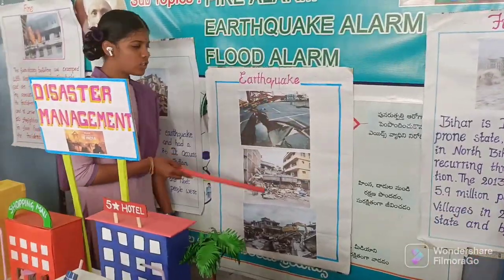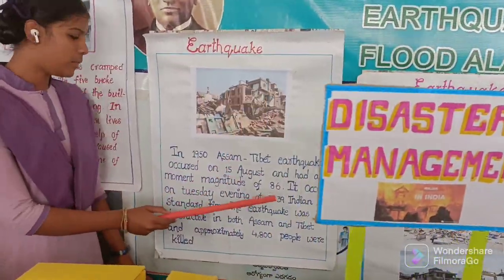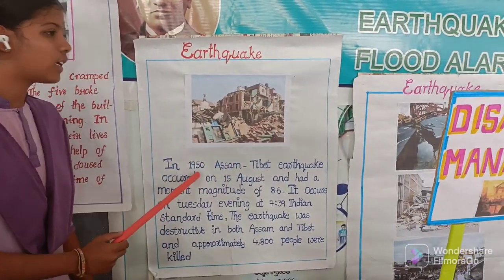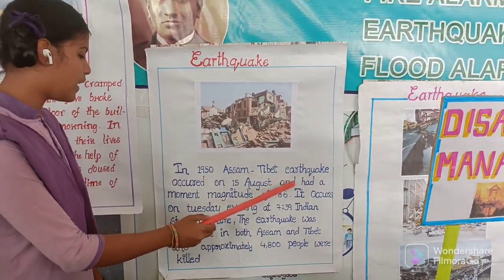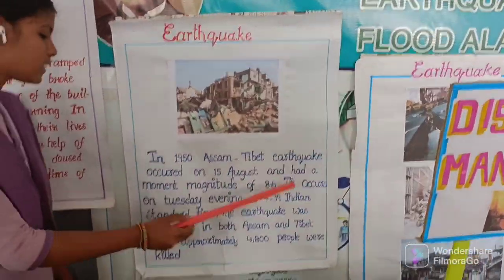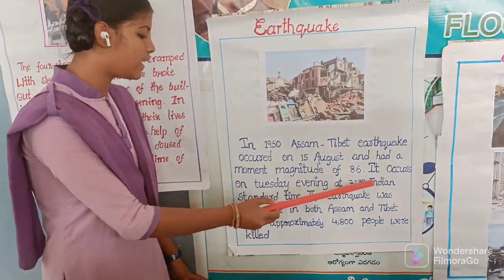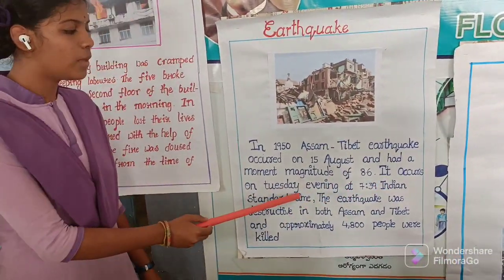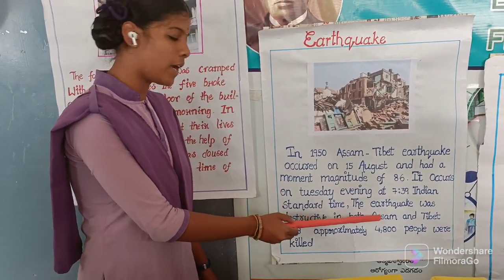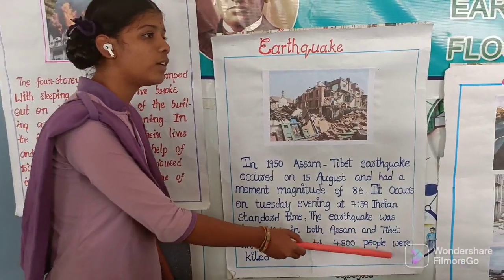These are some incidents of earthquakes. The Assam-Tibet earthquake occurred on 15th August 1950 and had a moment magnitude of 8.6. It occurred on a Tuesday evening at 7:39 Indian Standard Time. The earthquake was destructive in both Assam and Tibet, and approximately 4,800 people were killed.